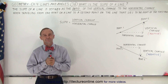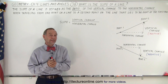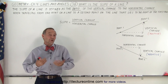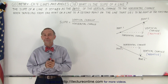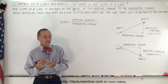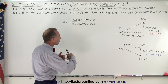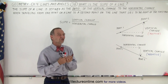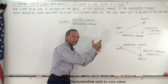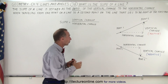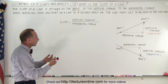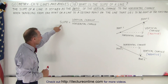Welcome to iLecterOnline. We're getting into a new topic when dealing with lines, and it's also a very important topic — it's called the slope of a line. The question may come up: what is the slope of a line? It turns out the slope of a line represents a ratio — a ratio of the change in the vertical direction divided by the change in the horizontal direction. The change in the vertical direction is the numerator and the change in the horizontal direction is the denominator. That ratio defines the slope.